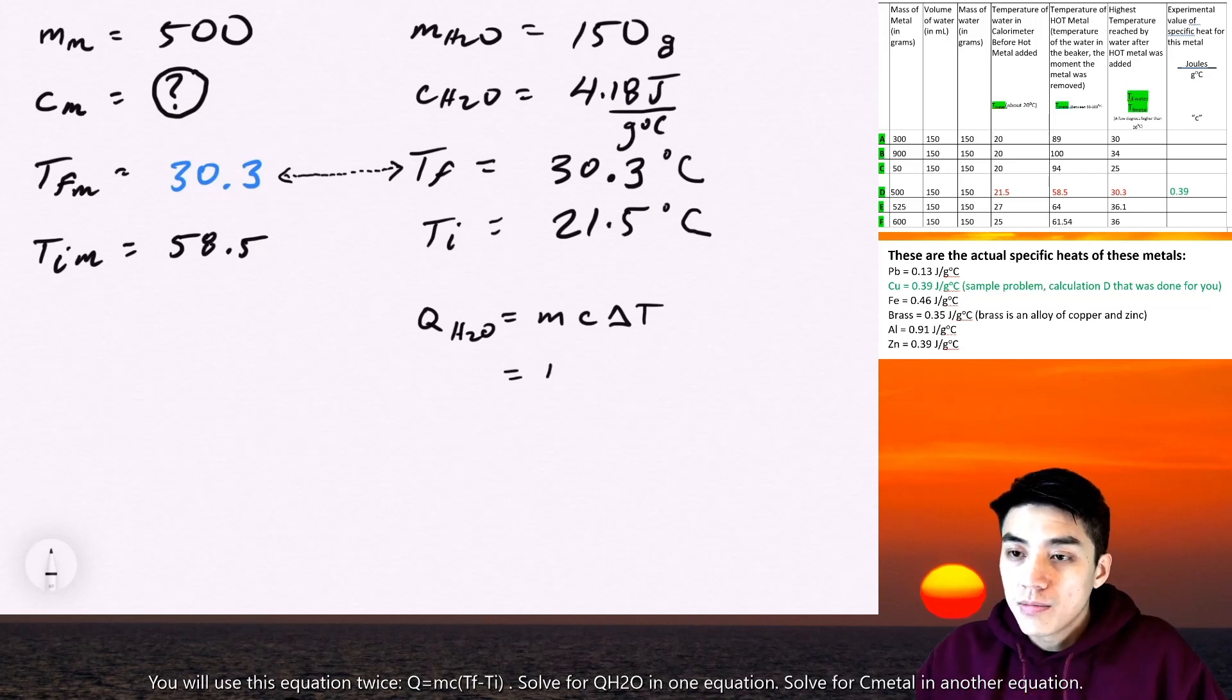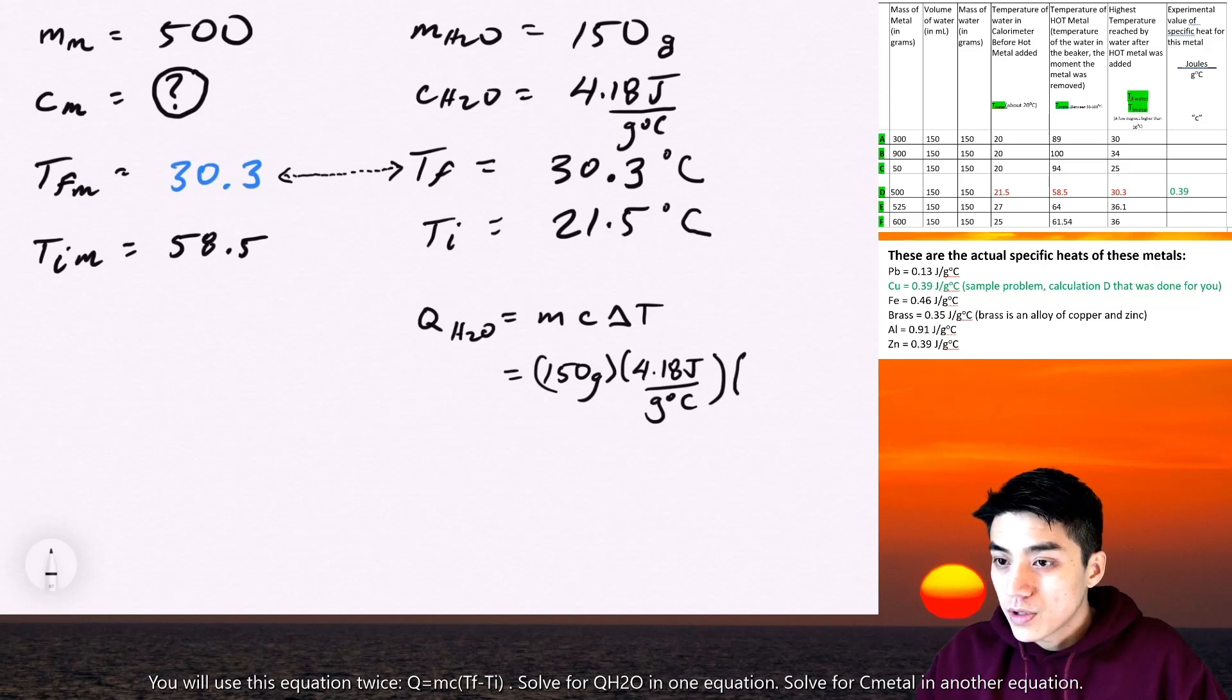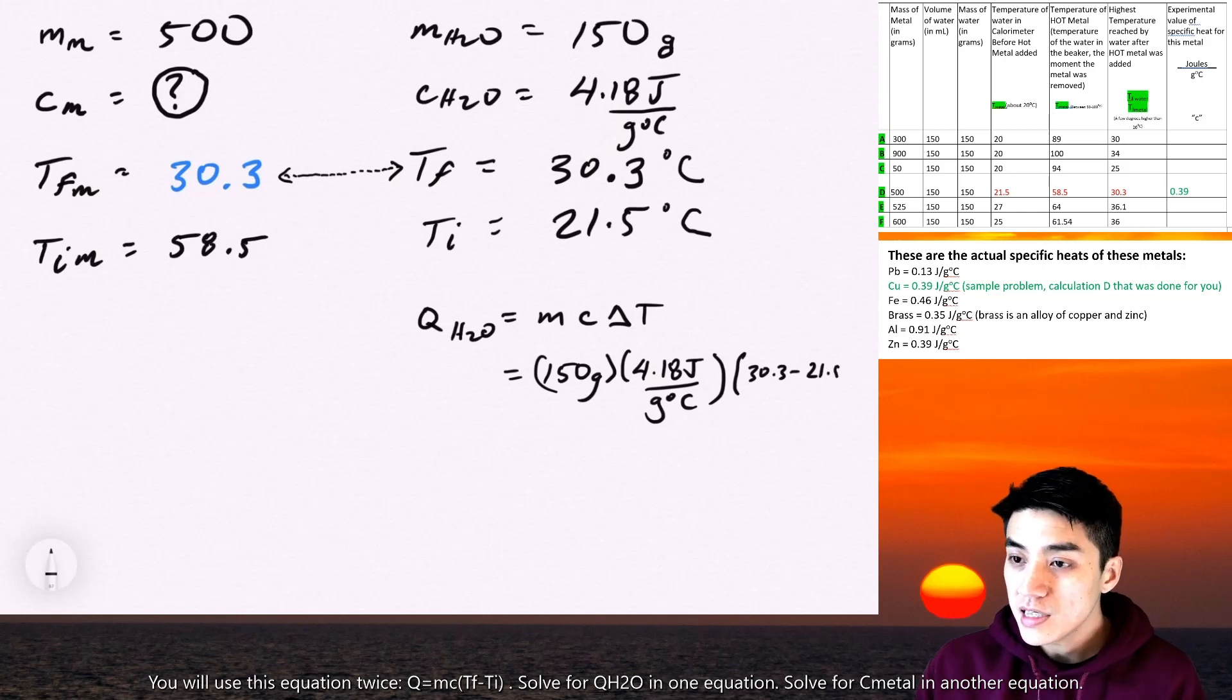I'm going to plug in my equation, Q equals MC delta T. And we're going to plug in 150 grams for the mass. 4.18 joules per gram degrees Celsius for the specific heat of water. And delta T is T final minus T initial. So 30.3 minus 21.5.